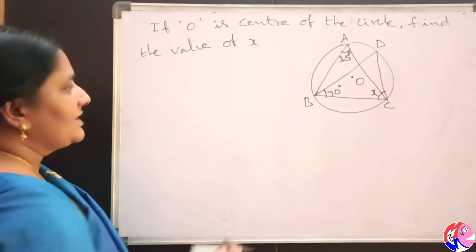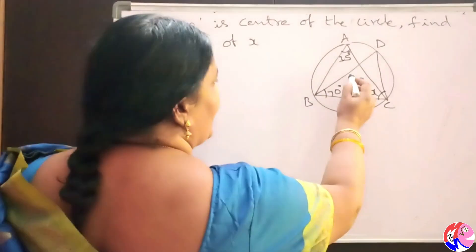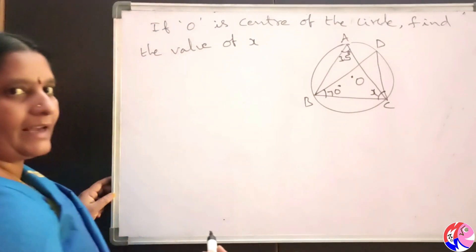Now, see here, O is center of the circle, BC is the chord.